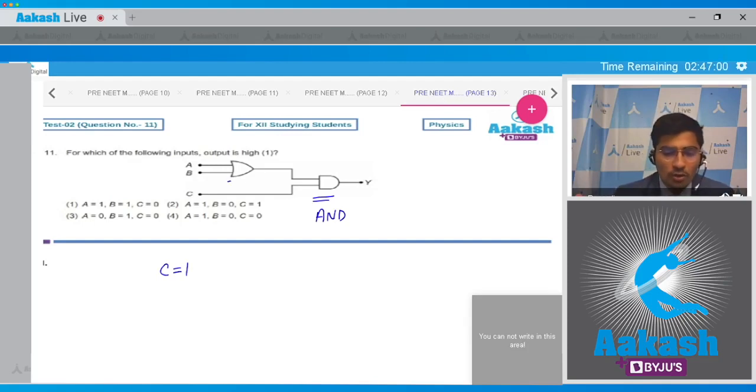Also, the output of this gate, which is an OR gate, should also be equal to 1, that is A plus B should be equal to 1. This can occur if any of A or B or both of them are equal to 1.